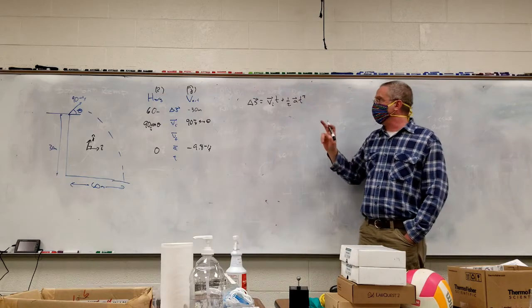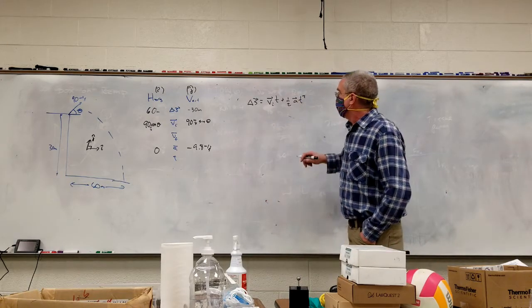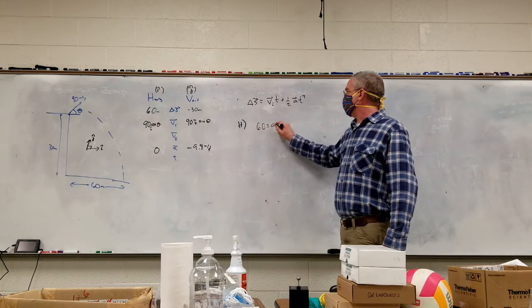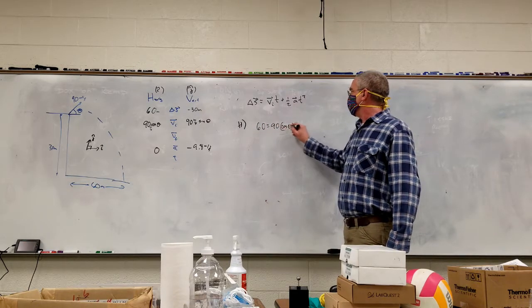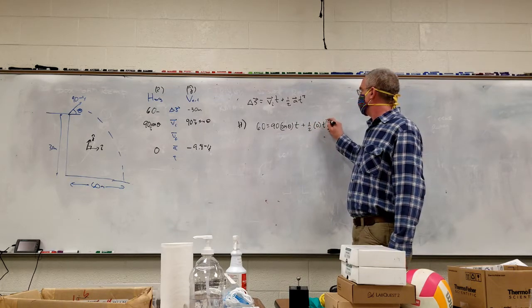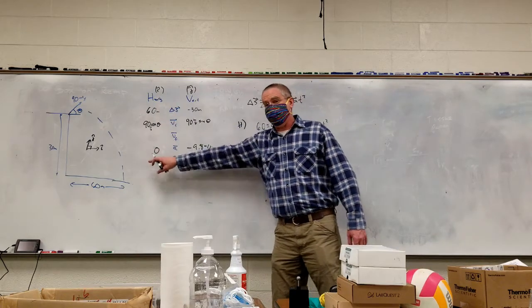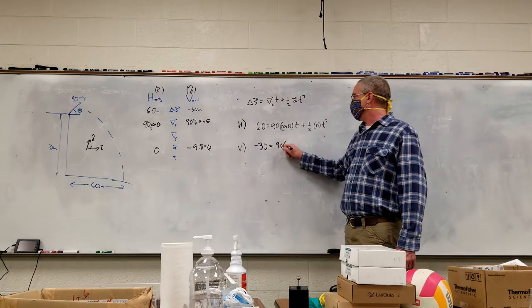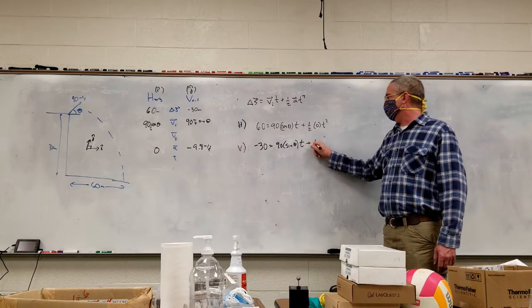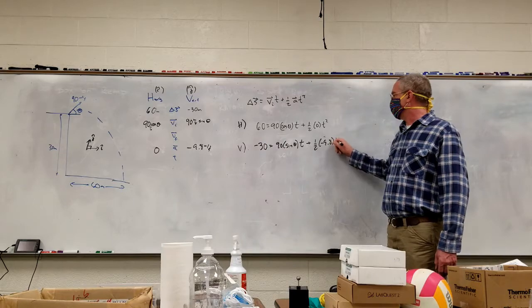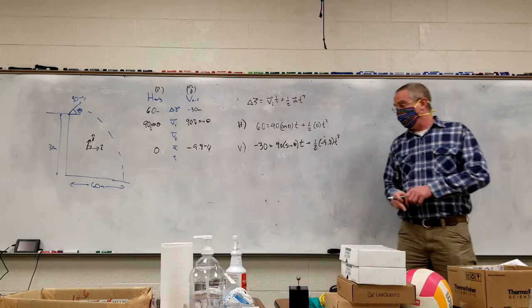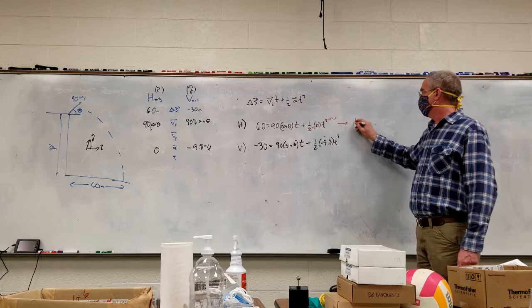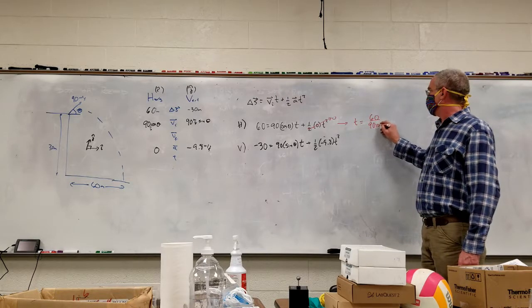We can use this constant acceleration equation since acceleration is constant. Horizontal equation: 60 = 90 cos θ · t + ½(0)t², so the last term drops out. Vertical equation: −30 = 90 sin θ · t + ½(−9.8)t². We have two equations, two unknowns. Solving for time in the first equation: t = 60 / (90 cos θ).